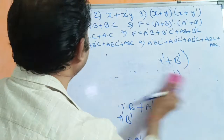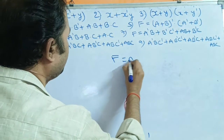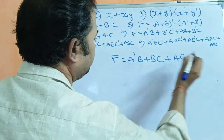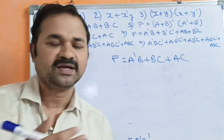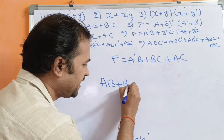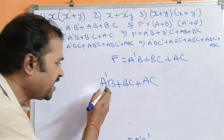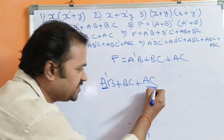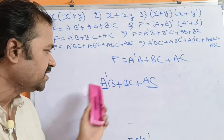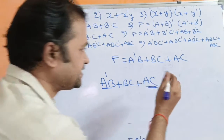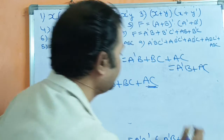Now the sixth example: F = ĀB + BC + AC. We have a formula called the consensus formula. If we have ĀB + BC + AC, here one term has Ā and another has A. The consensus term BC is redundant, so we avoid it. The solution is ĀB + AC.